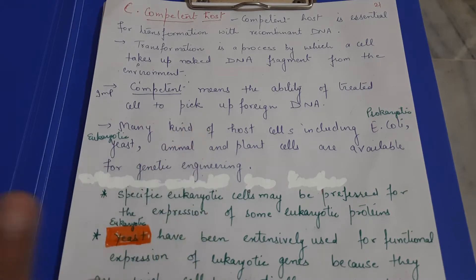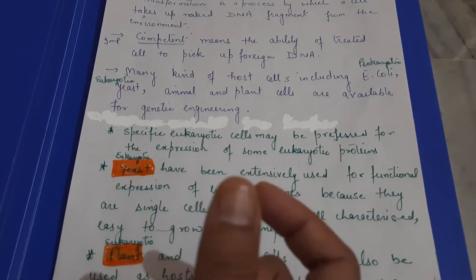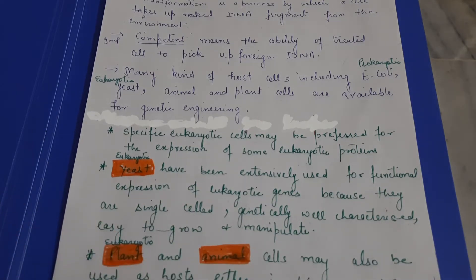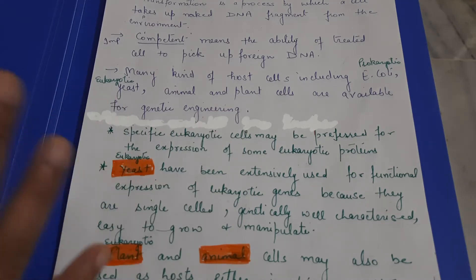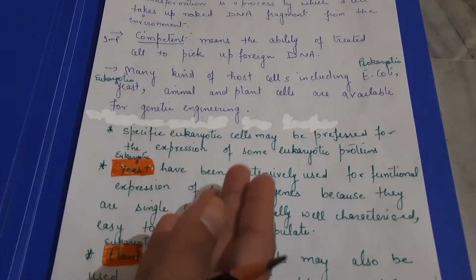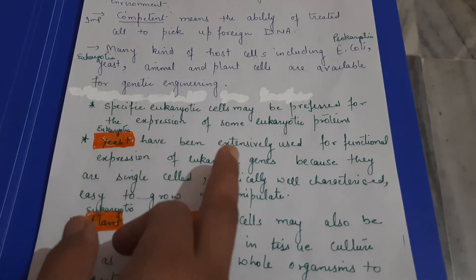Yeast is very widely used as a host because it is eukaryotic. If we want to express a eukaryotic gene, we place it in yeast. Although it is not a hard and fast rule — bacteria can also be used to insert genes from eukaryotes — yeast is mainly used for the expression of eukaryotic genes because yeast is single-celled, genetically well-characterized, and easy to grow and manipulate.